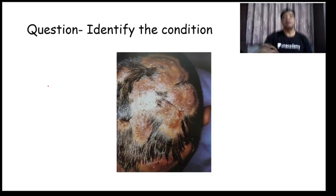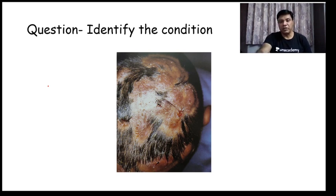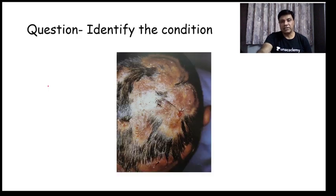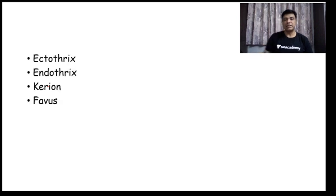Coming to the next question: identify the condition. You have involvement of the scalp. Your choices are ectothrix, endothrix, kerion, and favus. The correct answer is the patient is having kerion. Kerion is a type of tinea capitis.